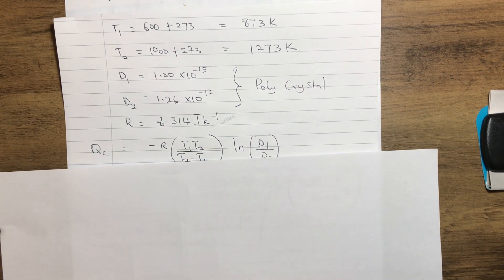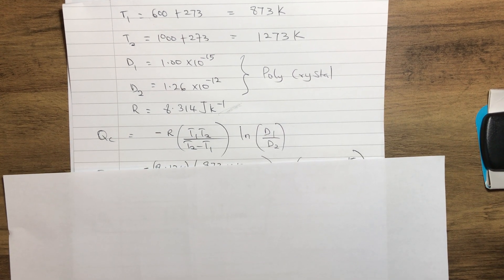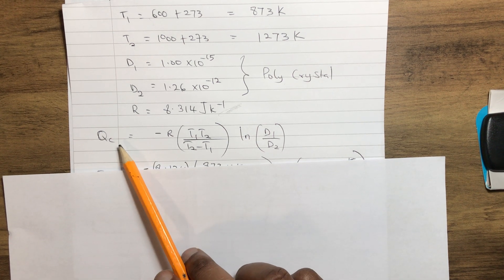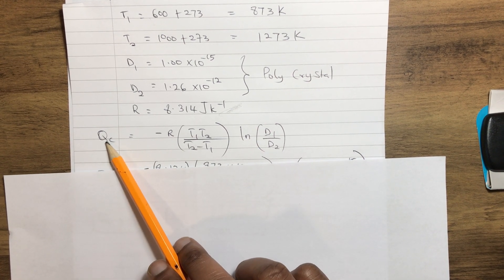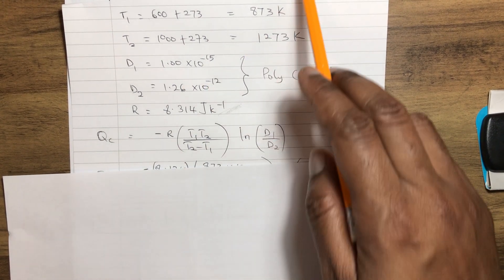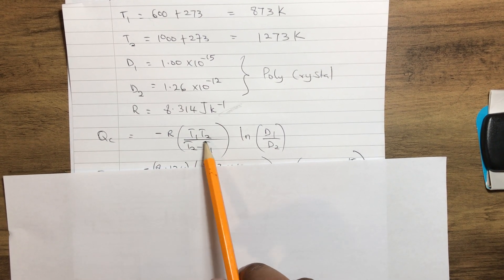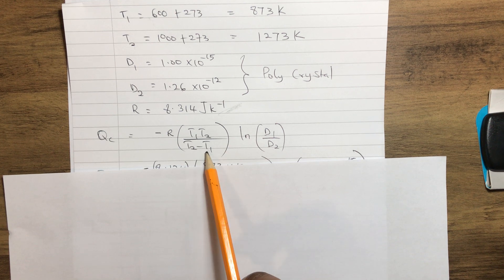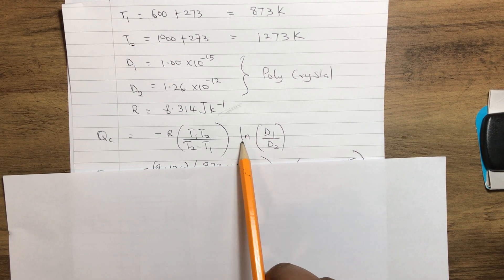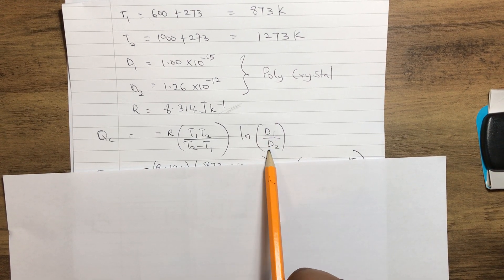From there, we can slot every parameter into our equation. Q, which is the activation energy of the polycrystal, equals -R(T1×T2)/(T2-T1) times the natural logarithm of D1/D2.